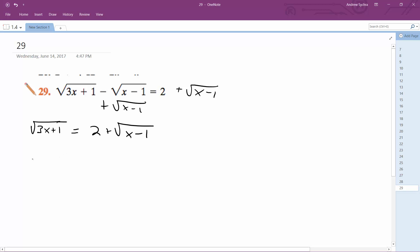Square both sides, so I end up with 3x plus 1 is equal to 4 plus 4 root x minus 1, and then plus x minus 1.